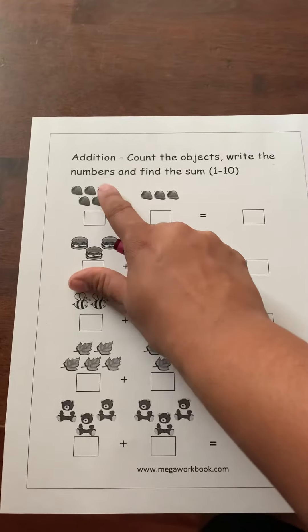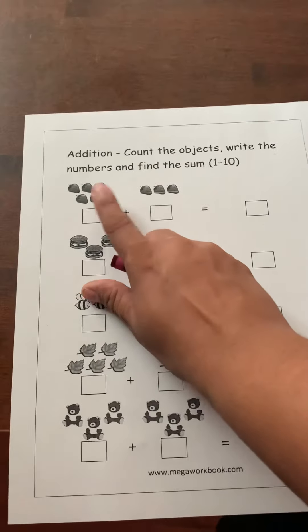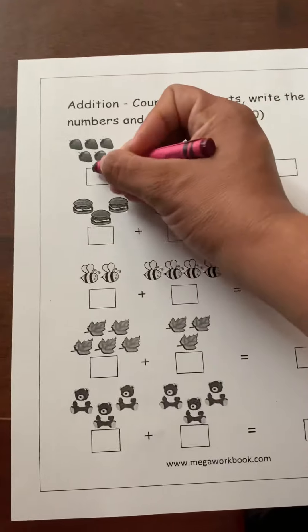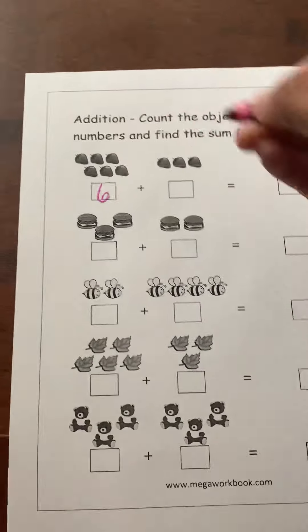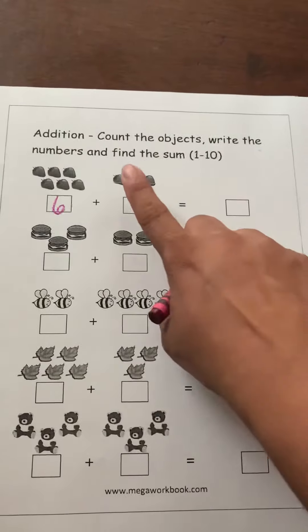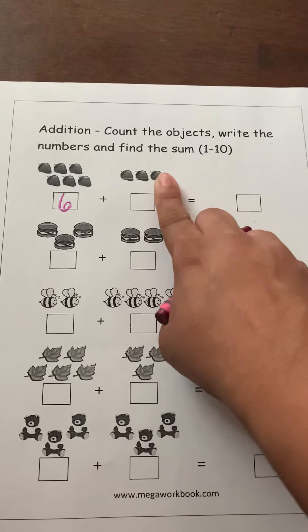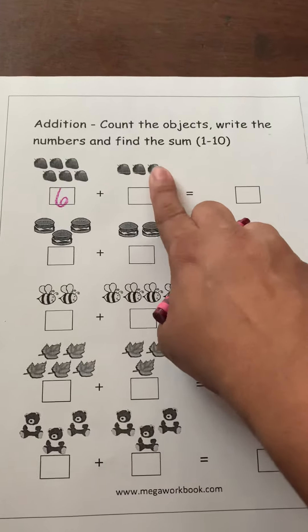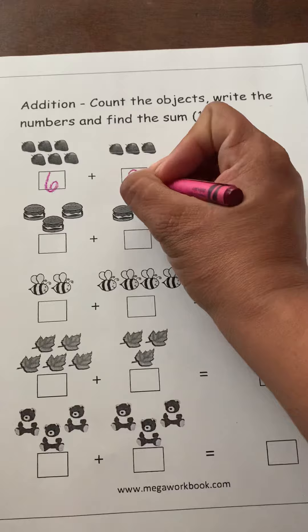So they're going to do one, two, three, four, five, and six. And then you're going to have them write the number six. And then they're going to count to see how many are up here. One, two, three. Write the number three.